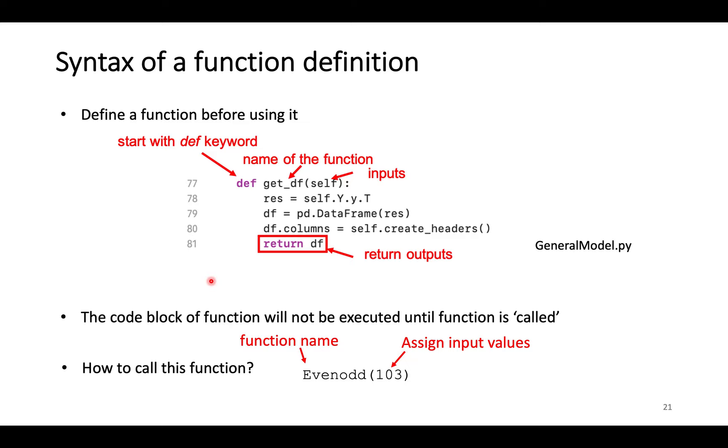If there are no return values, this expression is to stop execution of the function. The code inside a function will not be executed until this function is called. The upper program calling a function can be another function, the Python main program, or even terminal. The expression to call a function is a function name combined with input values, like this example.